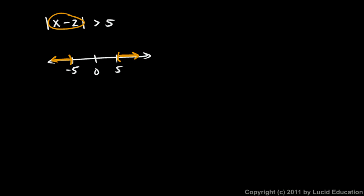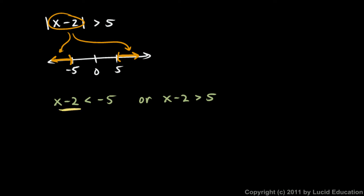x minus 2 has to be in one region or the other. So that means x minus 2 must be less than negative 5, or x minus 2 must be greater than positive 5. Now we have two little inequalities we can solve fairly easily. Just add 2 to both sides: x is less than negative 5 plus 2, which is negative 3. Or over here, add 2 to both sides and we get x is greater than 7. That's the solution we want to graph.